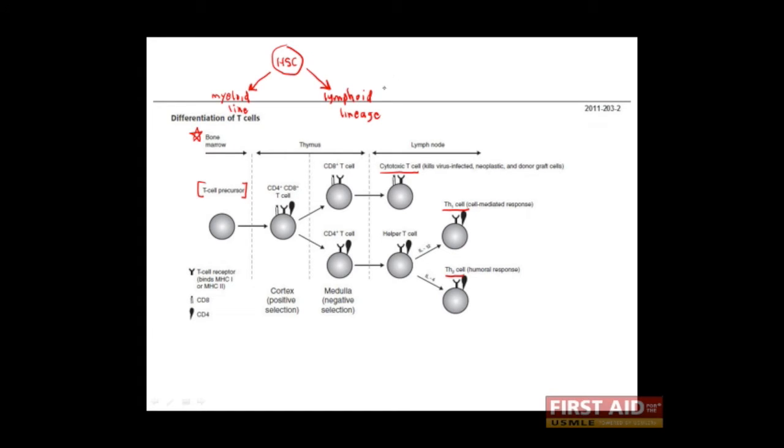As we've discussed before, the lymphoid line gives rise to T cells, B cells, and NK cells, which are the only innate cells which come from the lymphoid lineage. Now, even though these T cell precursors form in the bone marrow, they become the CD4 and CD8 T cells that we're familiar with in the thymus.